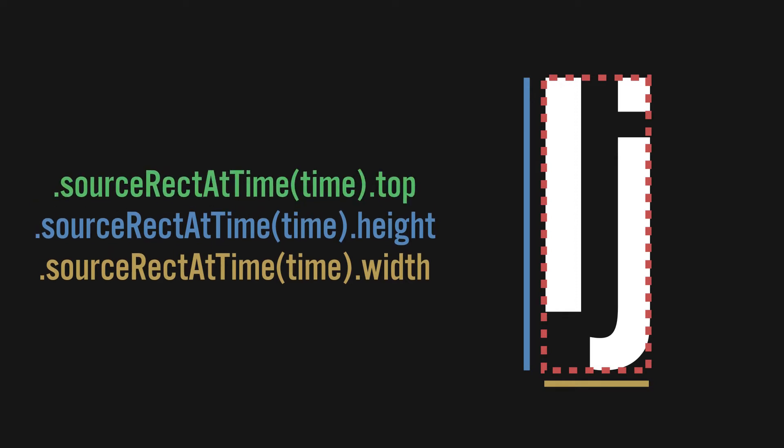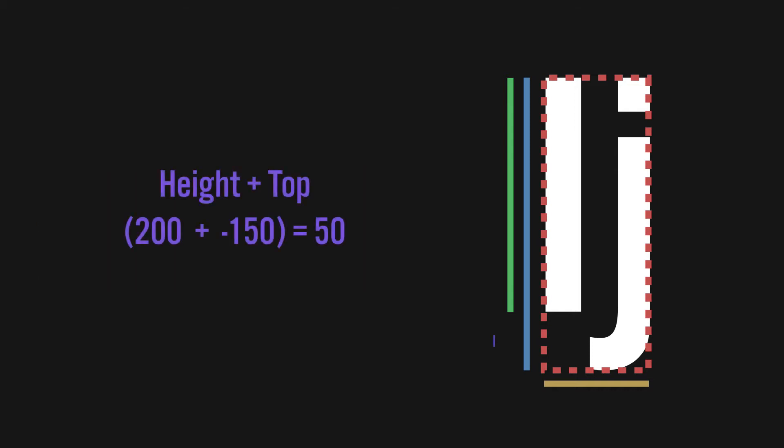There's even a thing called top, which is the space from the baseline of the text to the top of the text. This does not count hanging characters. But we can still get the height of hanging characters using the top and the height. You might first assume that we'd subtract the top from the height to get the hanging character portion, but since the top is already negative, all we have to do is combine the height and the top.